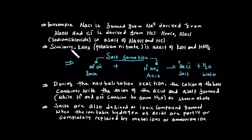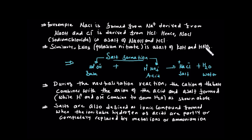In another example, potassium nitrate is a salt formed from potassium hydroxide and nitric acid. Potassium is the cation, and nitrate is the anion derived from nitric acid, giving us potassium nitrate.